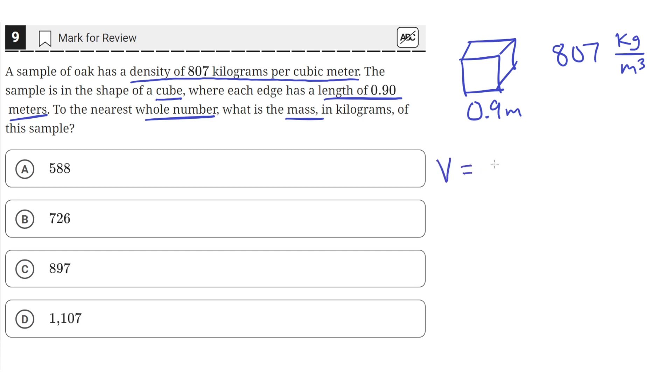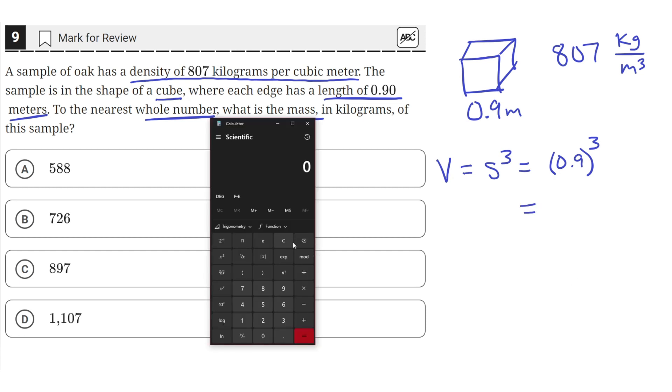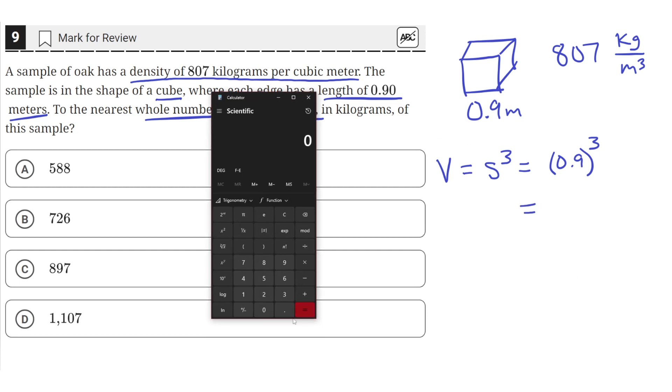The volume of a cube is equal to side cubed. We're given that the length of the side of the cube is 0.9 meters. So 0.9 cubed will be the volume of this cube.